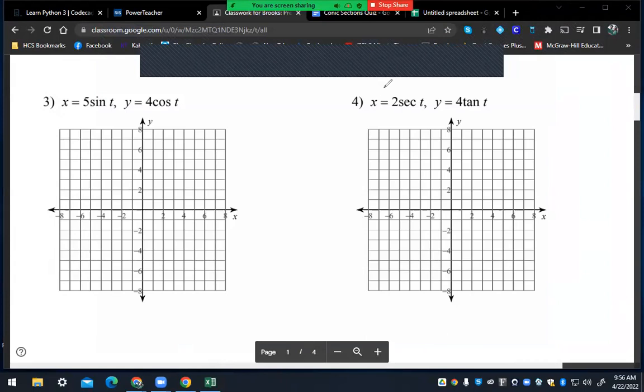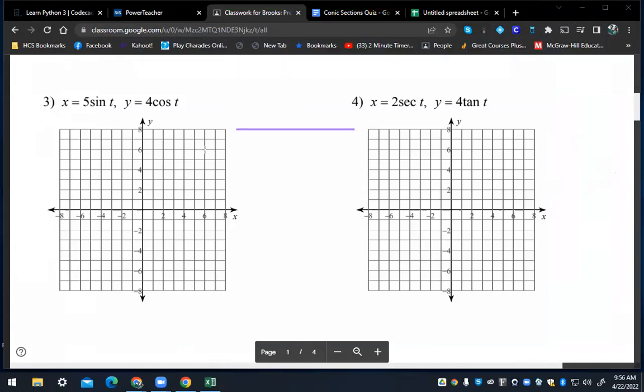Alright, so for this one, same idea, but once again for those who were not here yesterday, just follow along. We're going to create a three-way table. There's three variables we're dealing with: x, t, and y, so we're going to use our three variables.